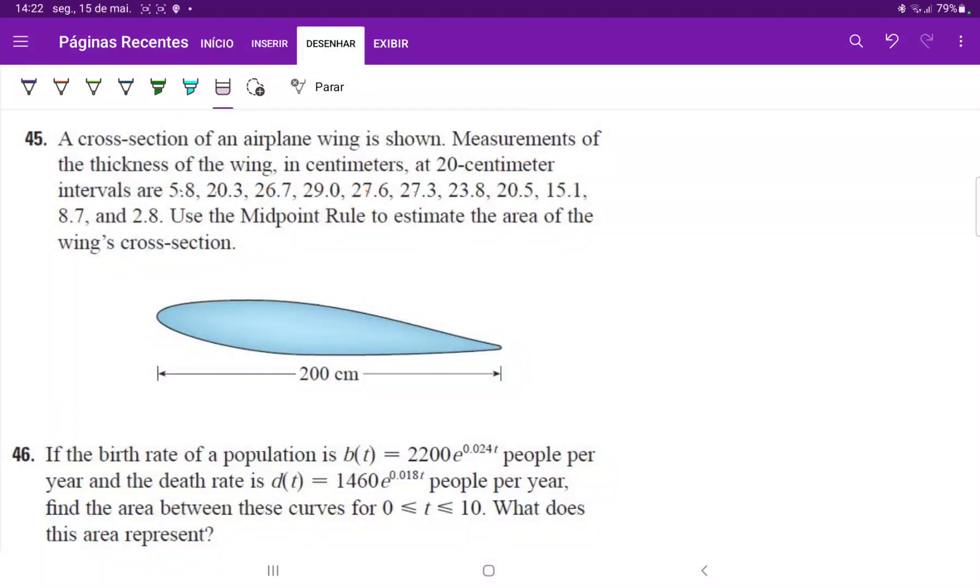So we're looking at the cross-section of an airplane wing and they're measuring the thickness of the wing at 20 centimeter intervals. So because the whole length is 200, what they did was they cut it up into, their analysis is considering 10 chunks that are of the same size.